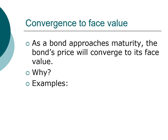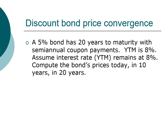Let's take a look at a couple of examples — how the price of a discount bond changes over time and how the price of a premium bond changes over time. First, let's look at a discount bond. We have a 5% bond, meaning the coupon rate is 5%. It has 20 years to maturity with semi-annual coupon payments. Yield to maturity is 8% — that is the interest rate — and we assume the interest rate stays at 8% throughout the life of the bond.